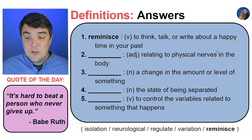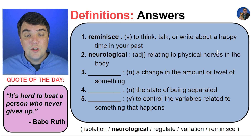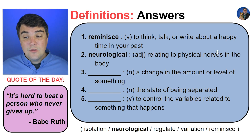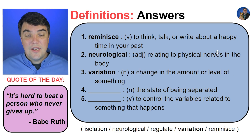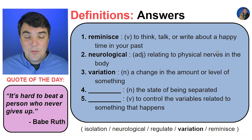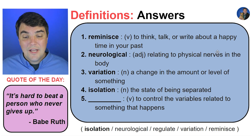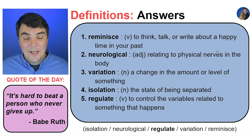Adjective: relating to physical nerves in the body. Neurological. Noun: a change in the amount or level of something. Variation. The state of being separated. Isolation. Verb: to control the variables related to something that happens. Regulate.